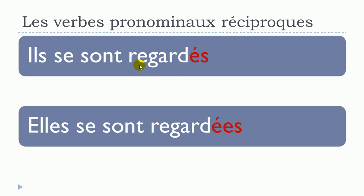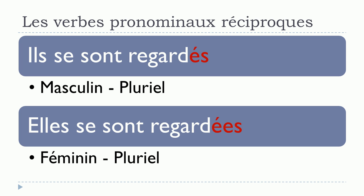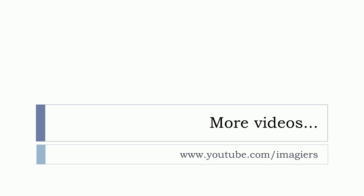Remember that we don't pronounce those endings, so phonetically regardés and regardées sound the same. But you should still write them correctly. So masculine pluriel gets an s, and feminine pluriel gets es. And that's it — I hope it was useful. We'll continue a little bit in the next video with les verbes pronominaux. Have a great day, au revoir et à bientôt!